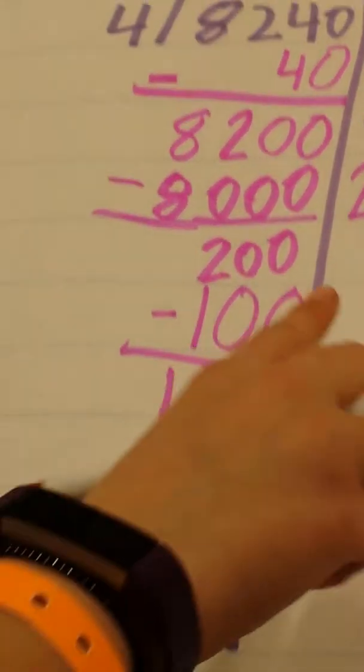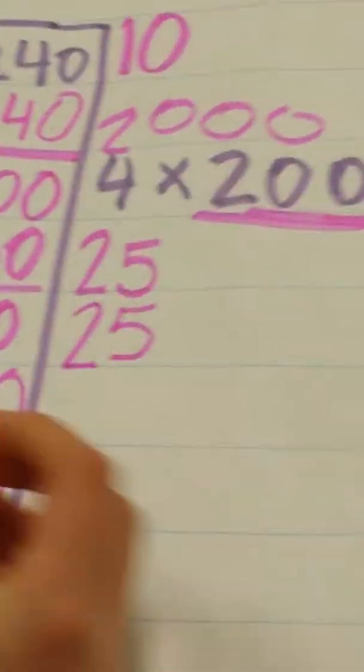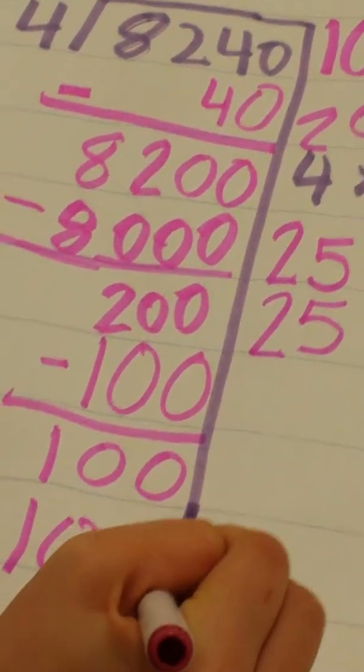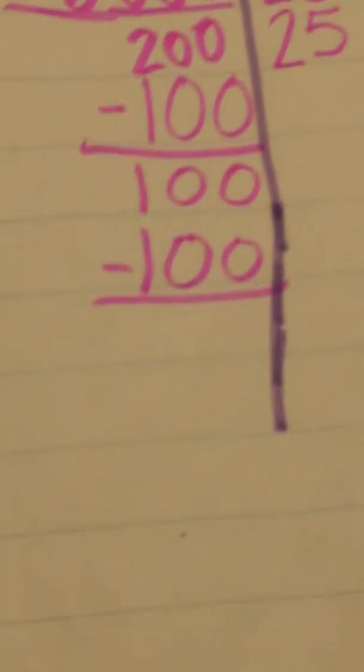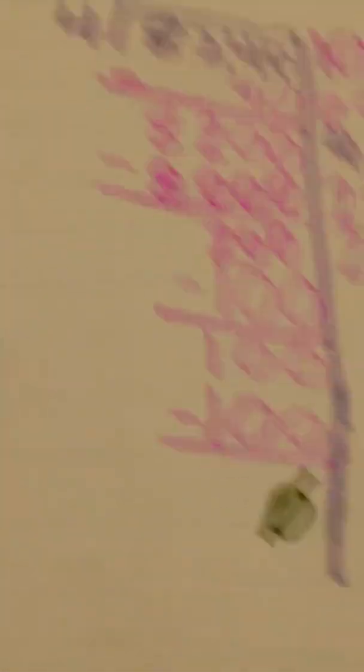So... We could obviously do 25 again, because that's 100, and then we would be bang on with no remainders. So let's do 25 again. And then we'll subtract it. Once we've subtracted it, you get... Zero.